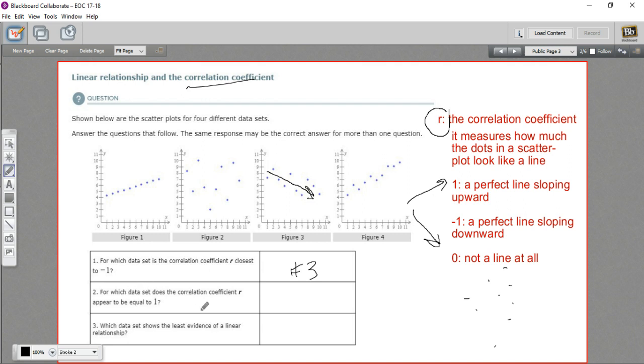Number 2 asks, for which data set does the correlation coefficient r appear to be equal to 1? And here, number 4, that looks pretty close. They're bunched up on a positive line. But look at figure 1, exactly a line. So that looks like it does actually have a correlation coefficient of 1. So that would be for sure figure number 1.